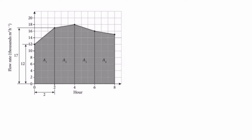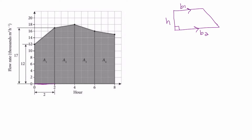Here is a better picture of what these trapezoids look like. You're probably used to seeing trapezoids drawn this way instead, with the parallel bases and the height perpendicular to the base. In this case, we are rotating these trapezoids. The height is going to be two, and then you have your two bases. So I can find the area of each one of these trapezoids.